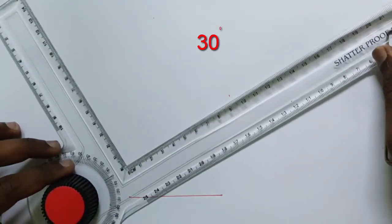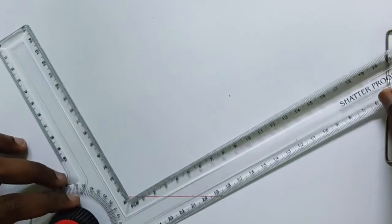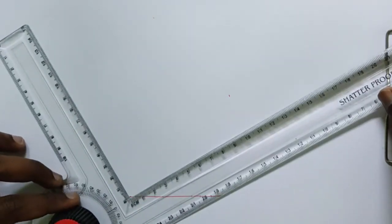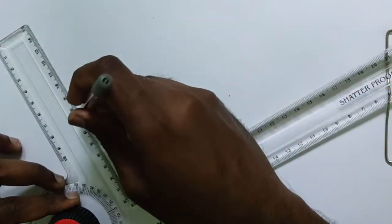So move your scale to 30 degrees in your drafter properly. Now I am just demonstrating and drawing that 70 mm line.